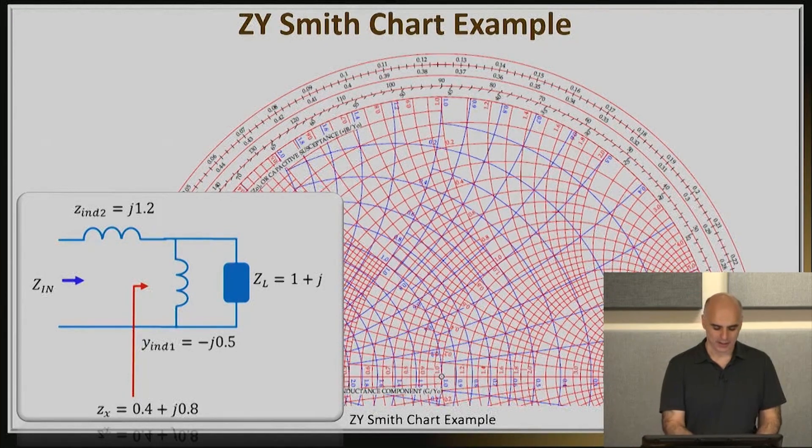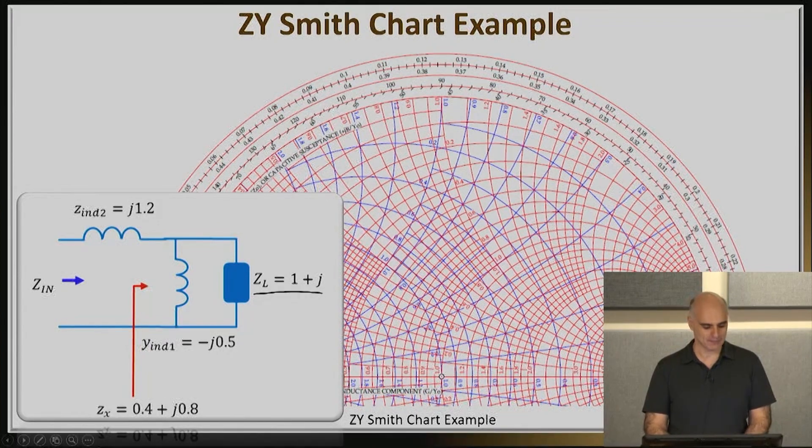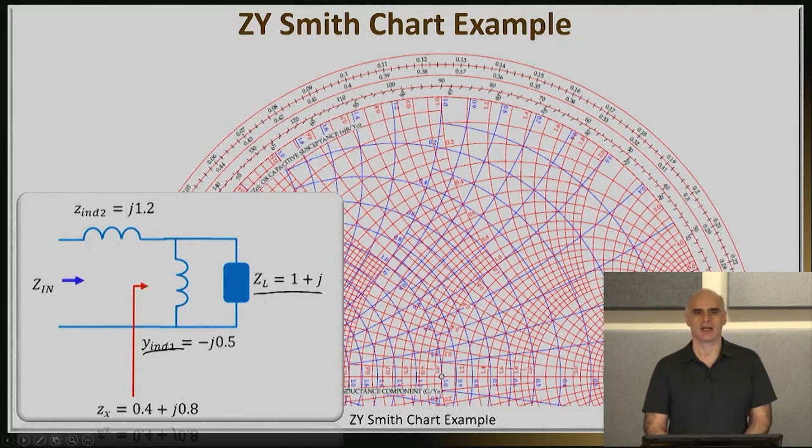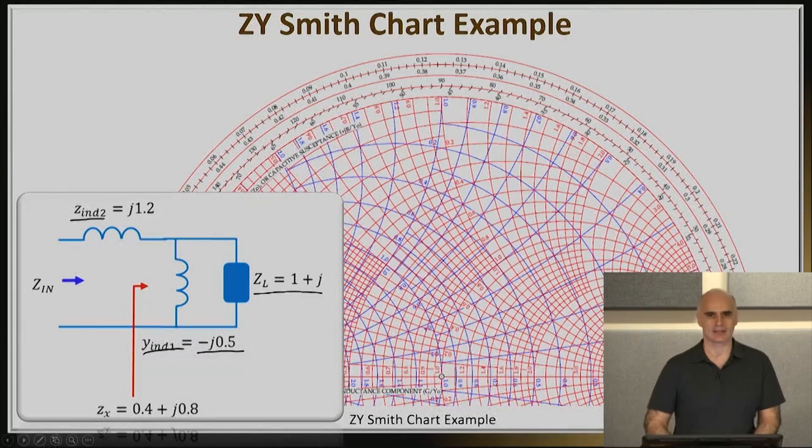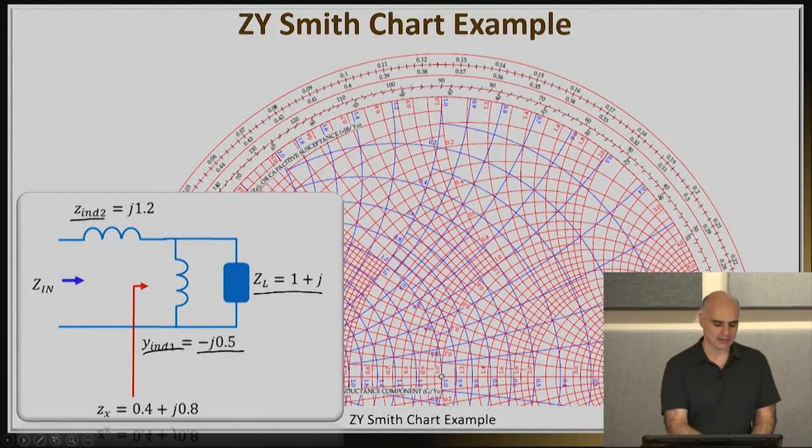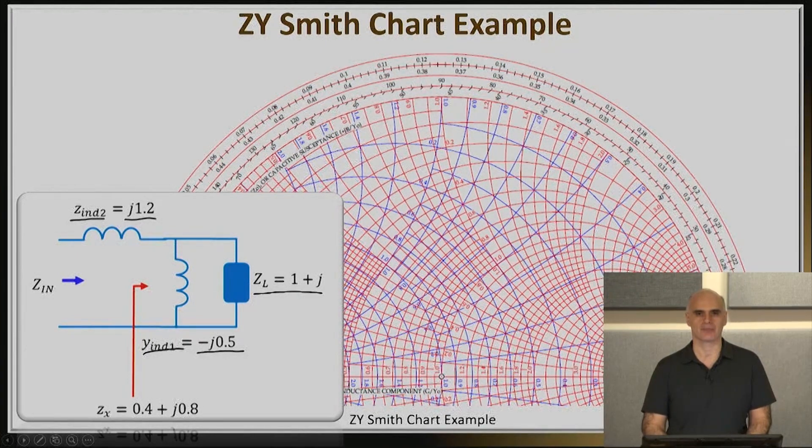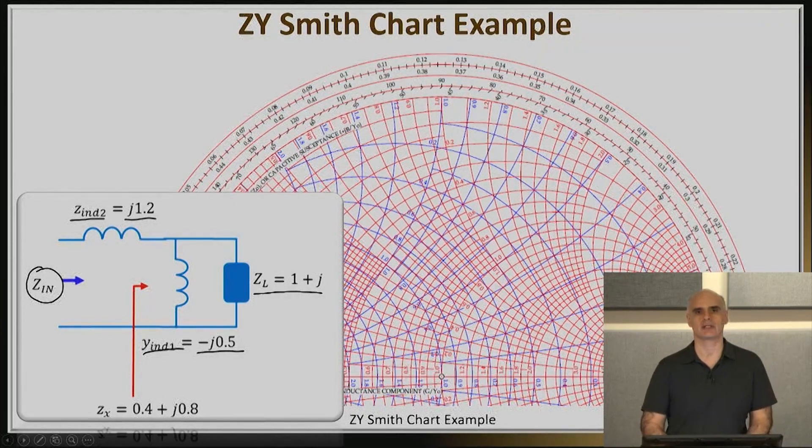What do we have here? We have a load whose normalized value is 1 plus j. In parallel with this load, I'm adding an inductance with a negative part of negative j0.5. Then there's also a series inductance with reactance j1.2. What I'd like to do is find the input impedance right here.